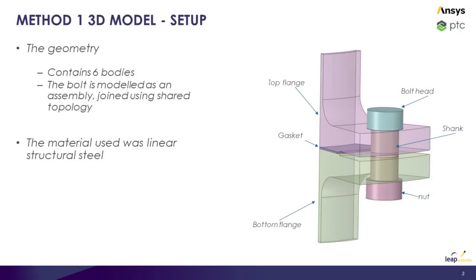For method one, we will use the entire geometry. This contains six bodies: a top flange, bottom flange, and a gasket with the bolt assembly. The bolt assembly contains three different bodies: the bolt head, the shank, and the nut. The material used for all the bodies was structural steel.